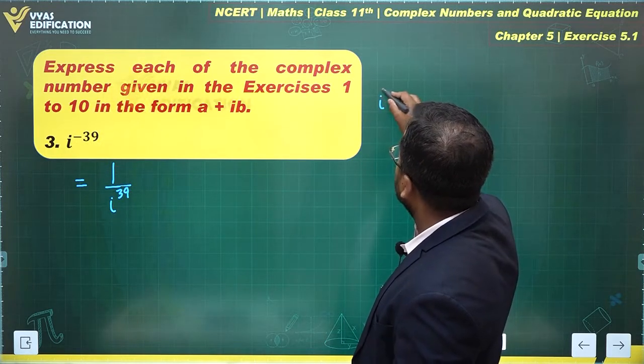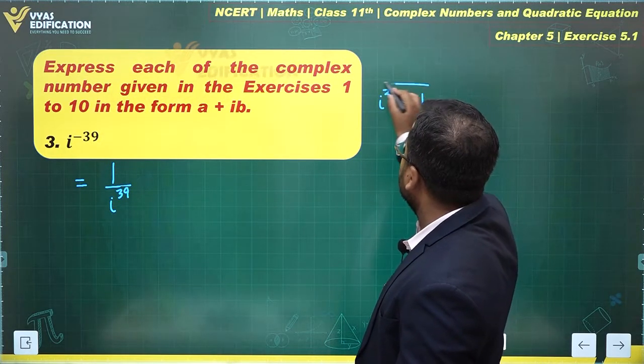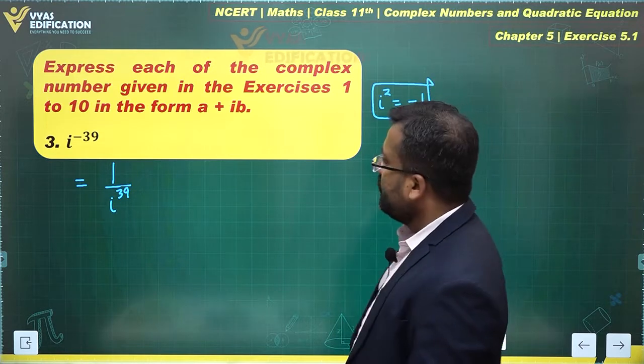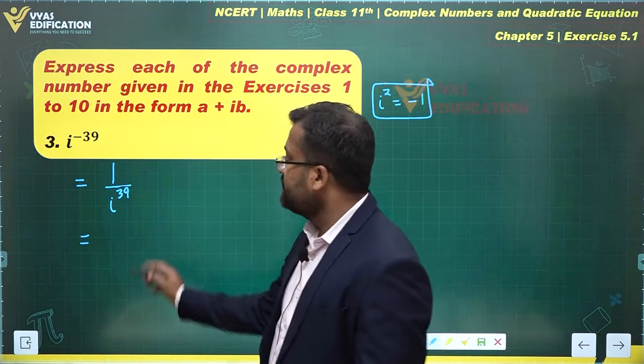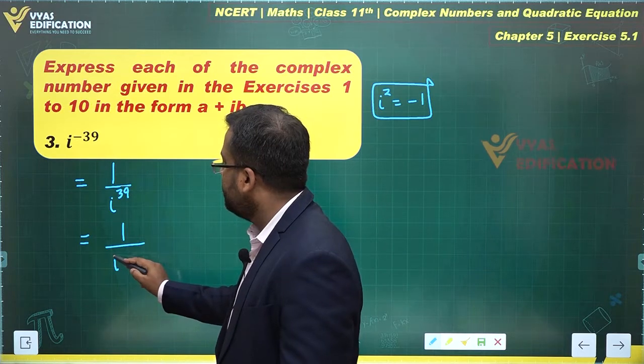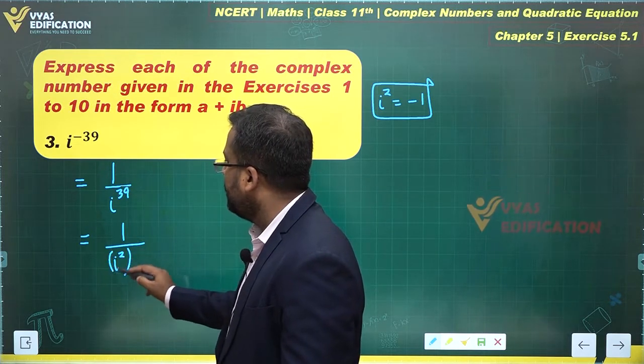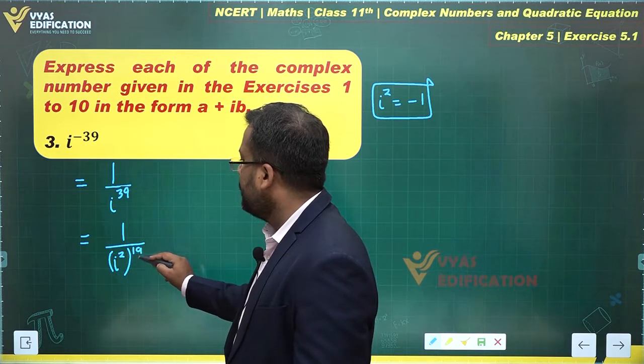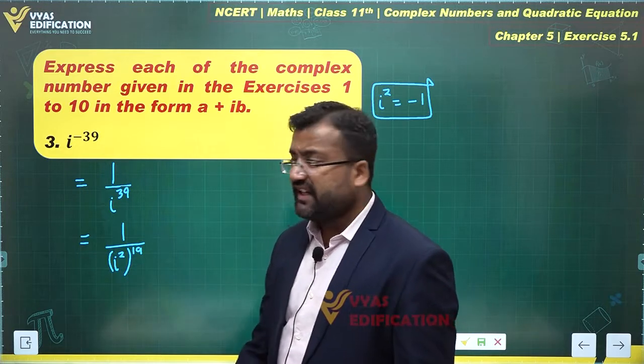We know that i squared equals minus 1. Since i squared equals minus 1, we can write it as i squared to the power 19, which gives me i to the power 38, and there's one more i remaining. So overall power becomes 39.